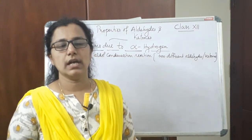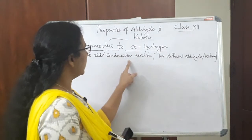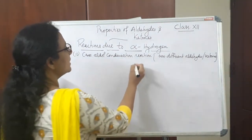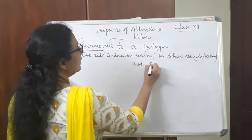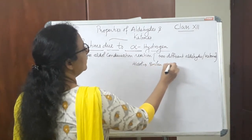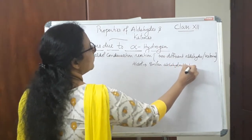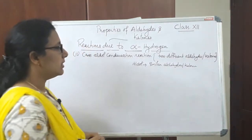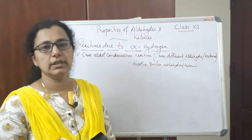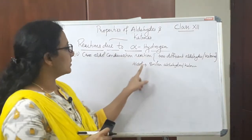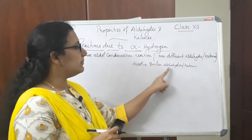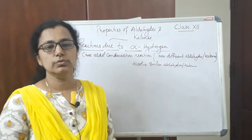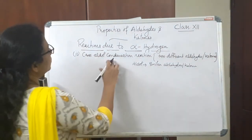Hello students. Today we will see cross aldol condensation reaction. Cross aldol condensation reaction is also a reaction due to alpha hydrogen atoms present in aldehydes or ketones. In simple aldol condensation, similar aldehydes or ketones are taken. But in the case of cross aldol condensation, two different aldehydes or two different ketones are taken in the presence of a base.